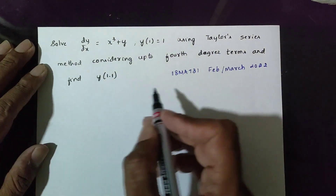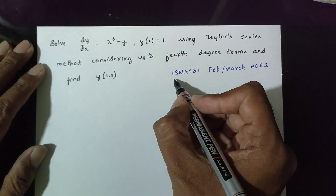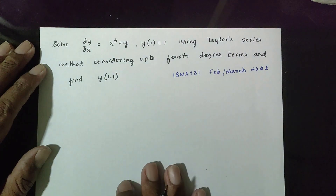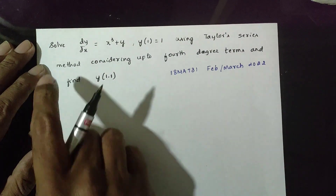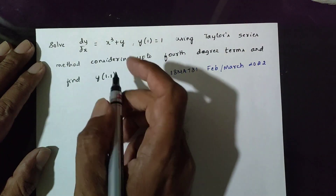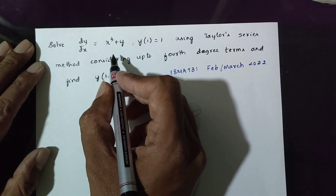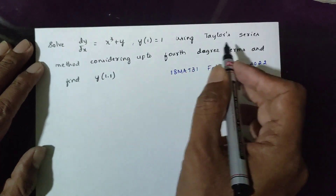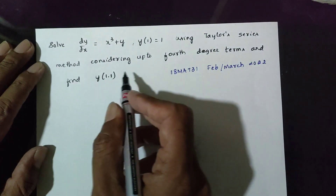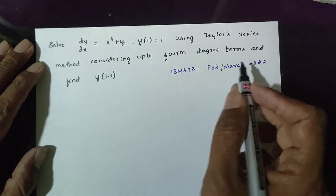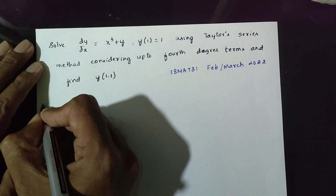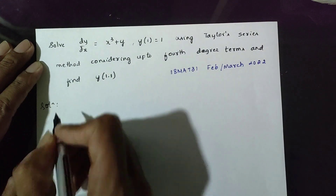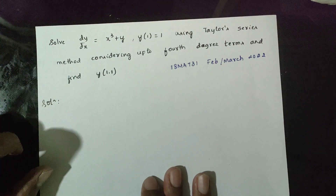Question 18.3.1, February to March 2022. Given dy/dx is equal to x² plus y, y(1) is equal to 1. Using the Taylor series method, considering up to 4th derivative terms, find y(1.1).